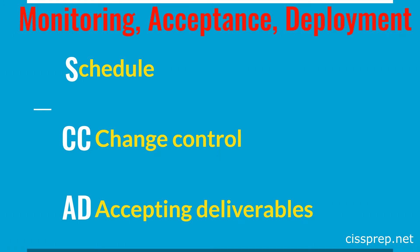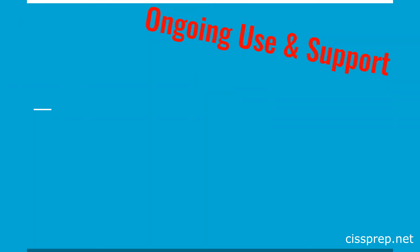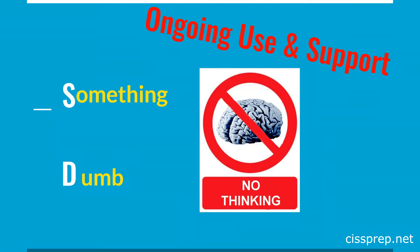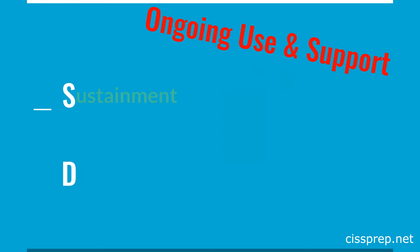With the ongoing use and support phase, we'll say: the PC is mad at us for something dumb. The S stands for sustainment, which involves ongoing use and maintenance. And the D is for disposal and decommissioning.